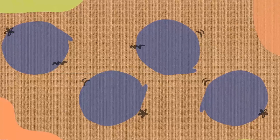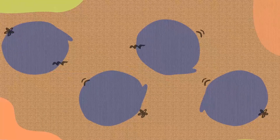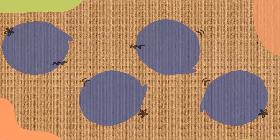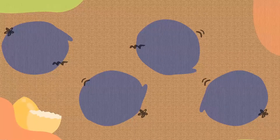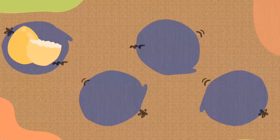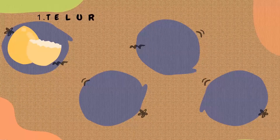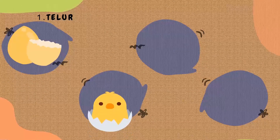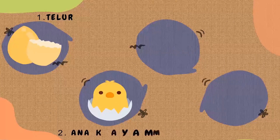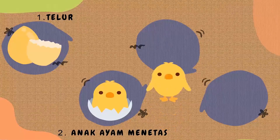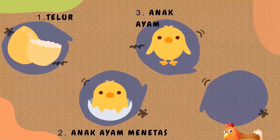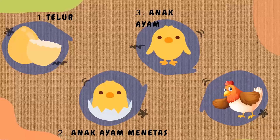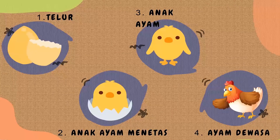Jadi sekarang kalian tahu kan bagaimana proses pertumbuhan dan perkembangan hewan ayam itu? Yang dimulai dari telur, kemudian menetas menjadi anak ayam, dan yang terakhir menjadi ayam dewasa.